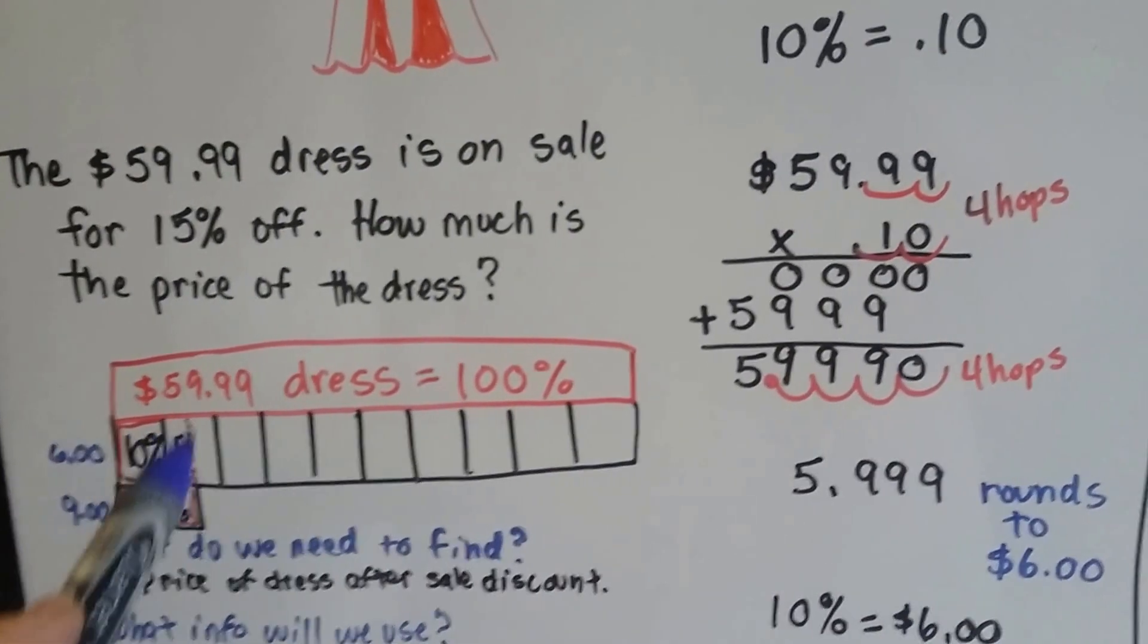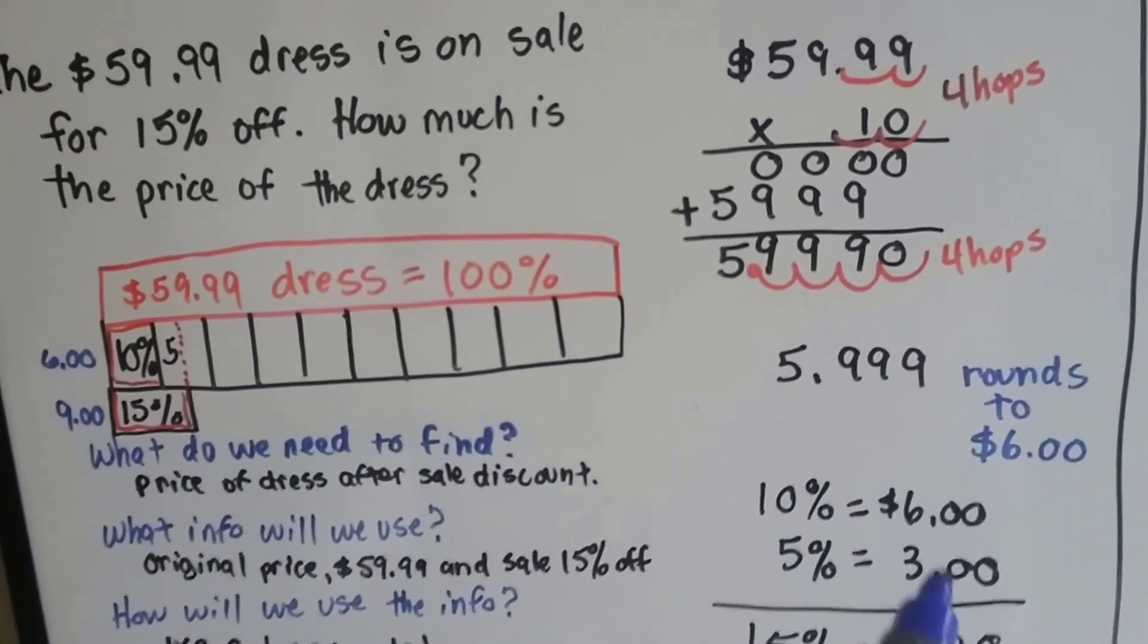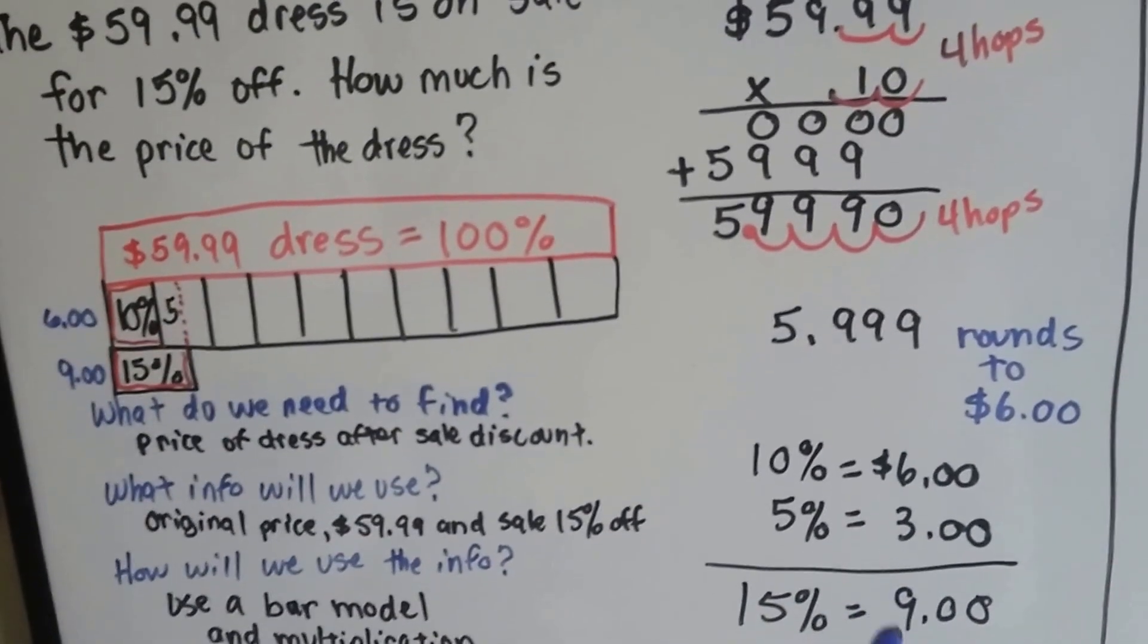Now we need another 5%. So we do half of $6 as $3, and we know that it's $9 off.